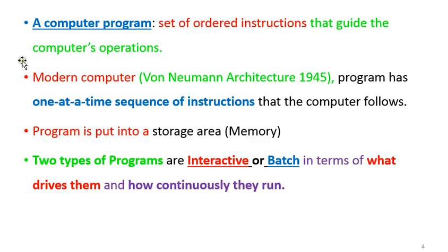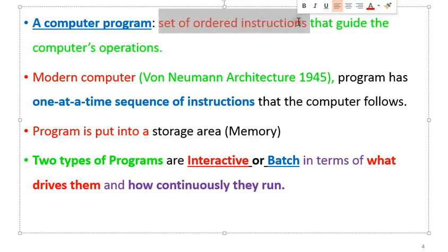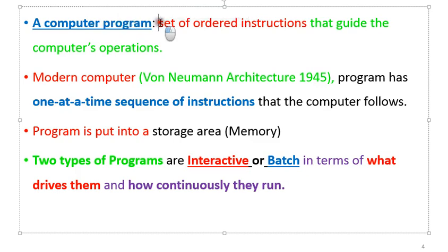Now, what is a computer program? Among the keywords in the definition, we said the computer is programmable. So what is a program? A program is a set of ordered instructions — instructions written in an orderly manner to guide the computer on how it should carry out its operations. Therefore, programming is the act of writing a set of ordered instructions that guide the operations of the computer.